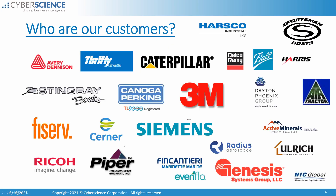Here's a list of some of our better-known customers using CyberQuery — big companies like 3M and Siemens, and others like Stingray Boats, Sportsman Boats, Air Tractor, Dayton Phoenix, Active Minerals, Ulrich, NIC Global, Genesis, Radius Aerospace, and Triumph. We've got over 250 sites using CyberQuery with either Sightline or CSI.